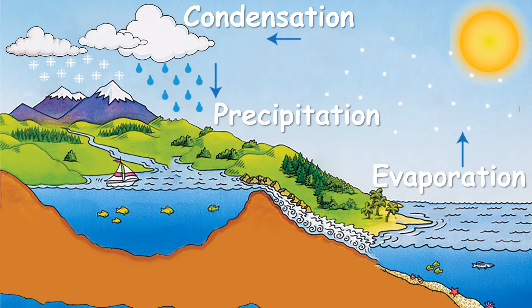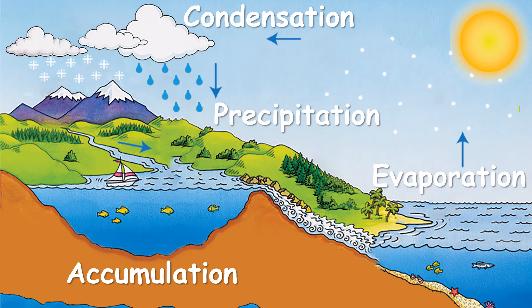When the water falls down, it accumulates again on the surface — in rivers, oceans, and lakes. This process is called accumulation, when the water returns to the surface and collects again in rivers, lakes, and oceans.